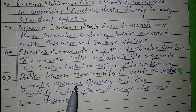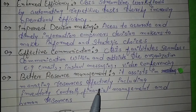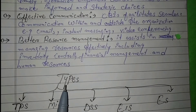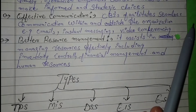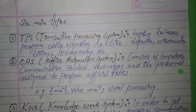Fourth is better resource management. Resources can be managed with the help of computer based information systems. It assists in managing resources effectively, including inventory control, financial management, and human resources.